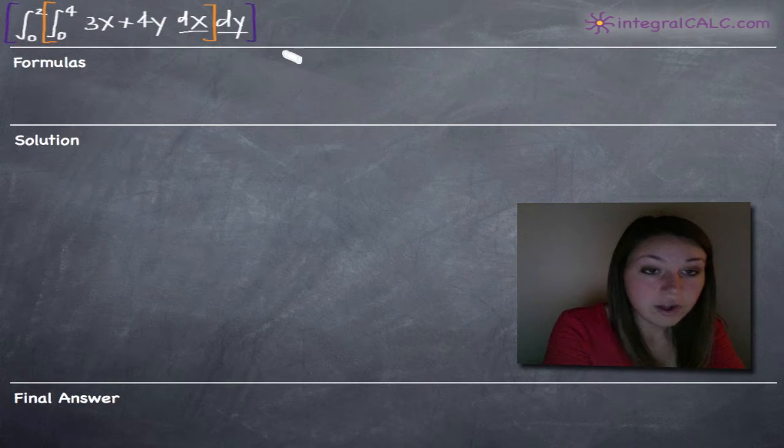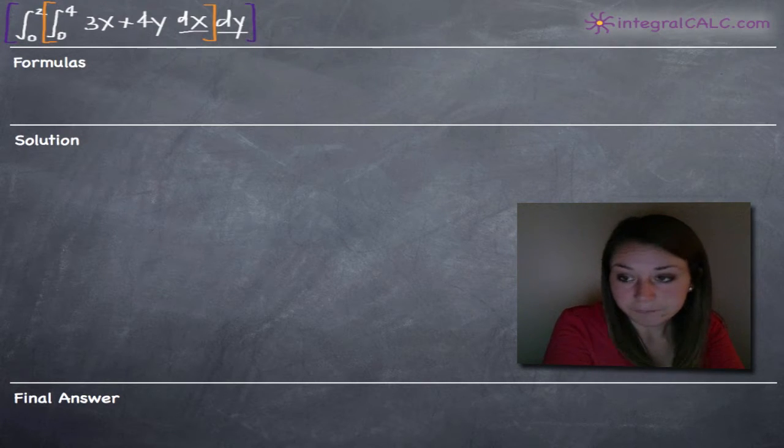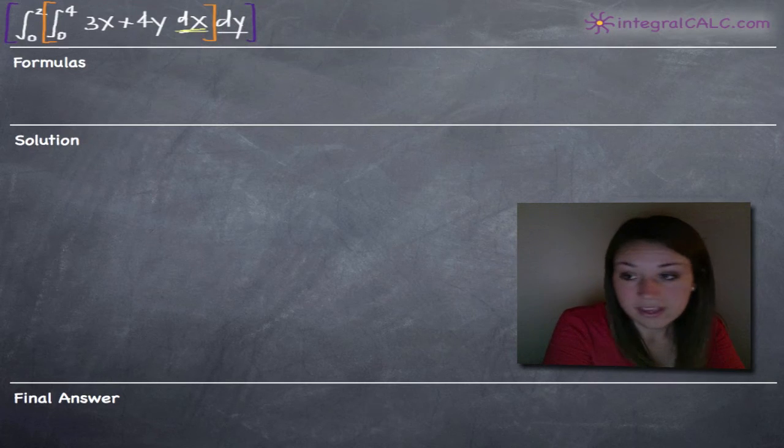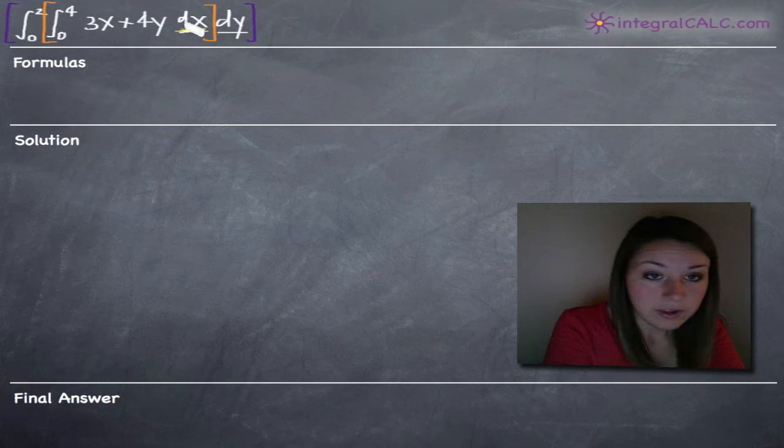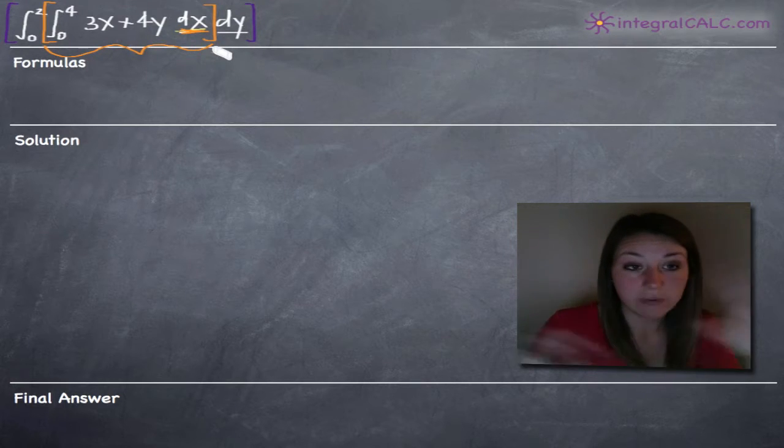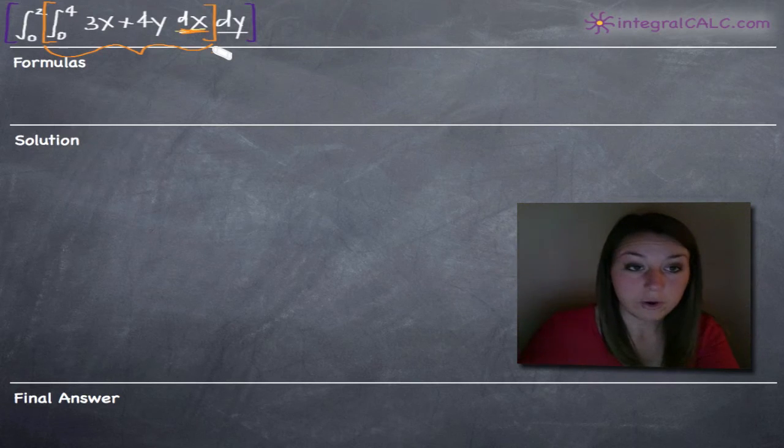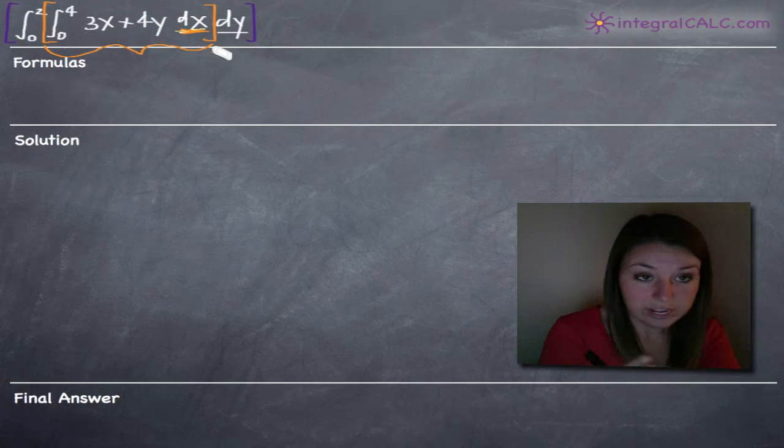So if we draw brackets that way we can see that the first integral is going to be taken with respect to x because we've got dx here inside the first integral. So we're going to completely ignore the outside for now, the integral from 0 to 2 and dy, and we're just going to look at what's inside the orange right here.